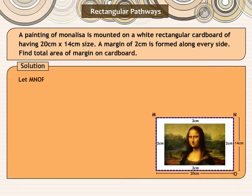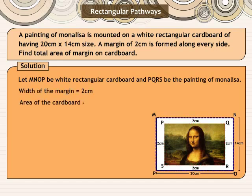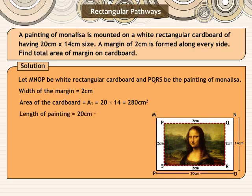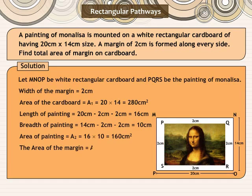Solution: Let MNOP be the white rectangular cardboard and PQRS be the painting of Mona Lisa. Width of the margin is equal to 2 cm. Area of the cardboard A1 is equal to 280 cm square. Length of painting is 20 cm minus 2 cm minus 2 cm equal to 16 cm. Breadth of painting is 14 cm minus 2 cm minus 2 cm equal to 10 cm, as 2 cm margin is formed on both sides. Therefore, area of painting A2 is equal to 160 cm square. Thus, the area of the margin is equal to A1 minus A2, equal to 120 cm square.